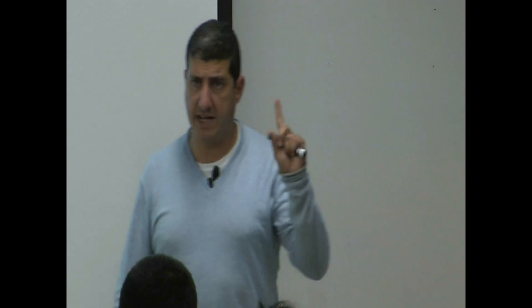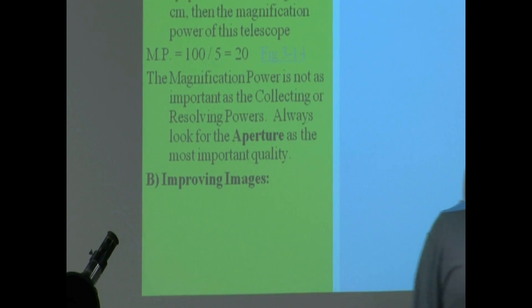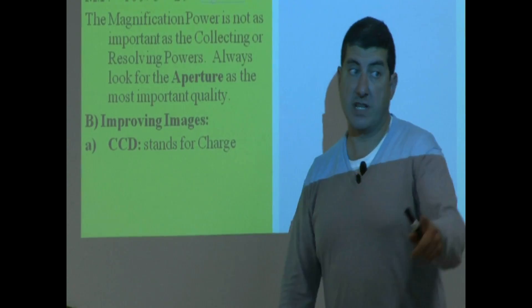The other techniques that we have besides making the aperture big, the other techniques that astronomers can improve the image of what they're seeing, the first thing is a CCD. This is the most basic thing. Pretty much all telescopes nowadays have this, just like all digital cameras have CCDs in them now.